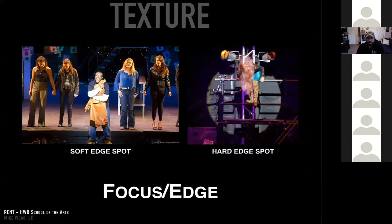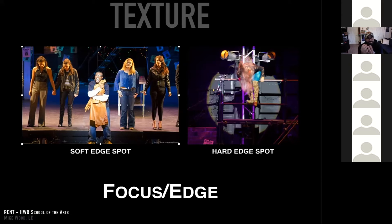Also within texture is focus or edge. In a production of Rent, both Mimi and Collins are in follow spots, but Mimi's is very hard-edged and Collins's is very soft-edged. That simple change completely changes the connotation. A hard-edge on Collins would shift from a soft, pulled-out moment to 'I want all focus on him.' For Mimi singing out tonight, you want that hard edge — she's the performer, that's where we look. Putting a soft-edge on her wouldn't have the same impact.